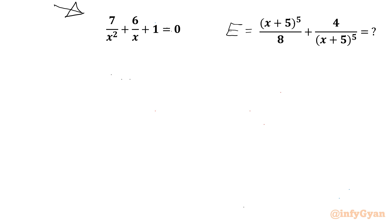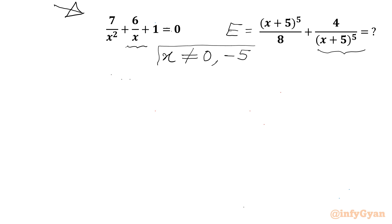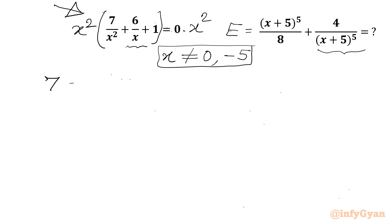We can see x in the denominator and x+5 is also in the denominator, so x cannot be equal to 0 and −5. Since x is non-zero, I can multiply both sides by x². We get: x² × 7/x² = 7, x² × 6/x = 6x, and x² × 1 = x². So the equation becomes 7 + 6x + x² = 0.